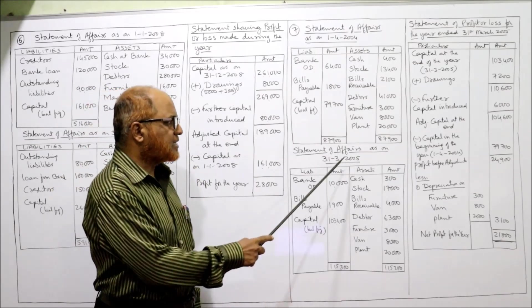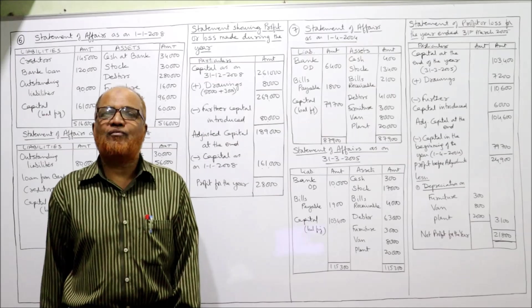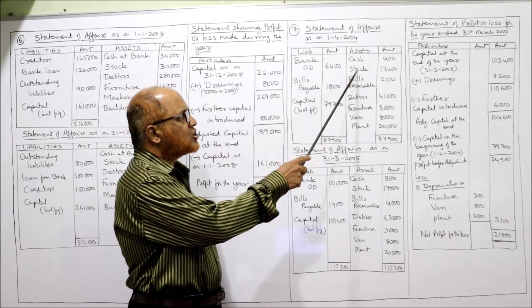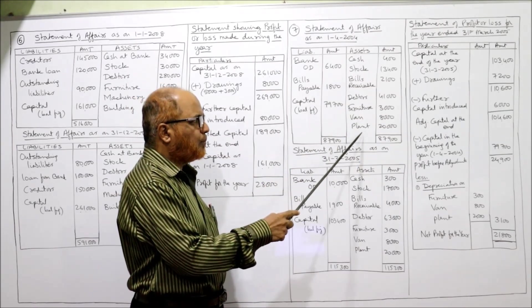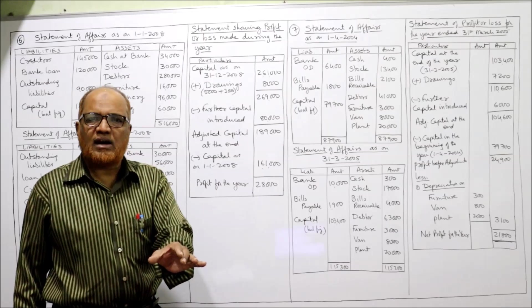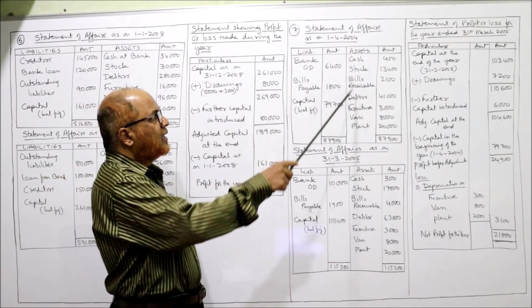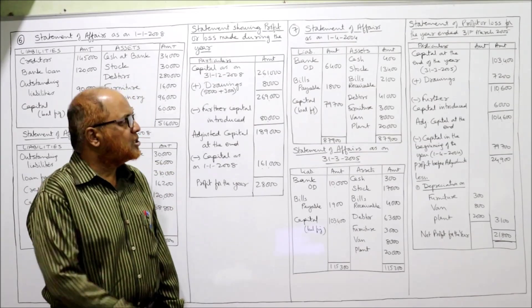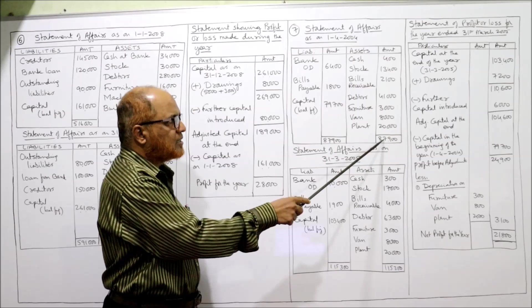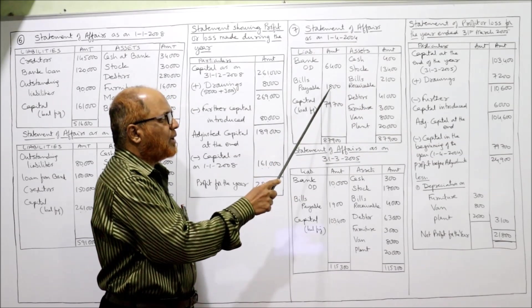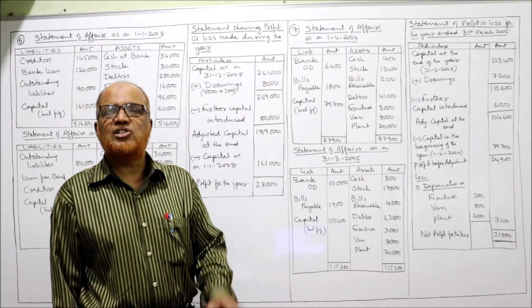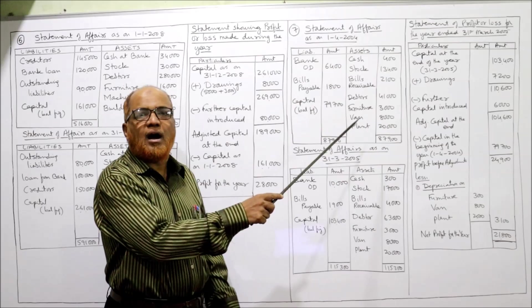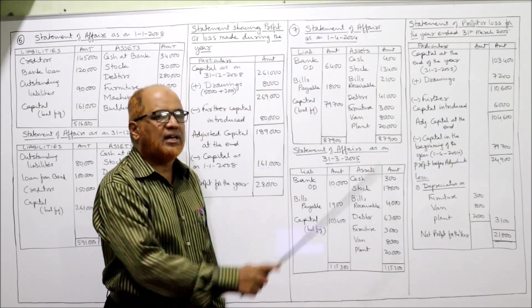Statement of affairs on 1st April 2004 — beginning of the year. All assets taken: cash, stock, bills receivable, debtors, furniture, van, and plant. Two liabilities: bank overdraft and bills payable. Total assets: 87,900. Deduct liabilities of 6,400 and 1,800. Opening capital is 79,700.